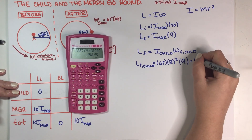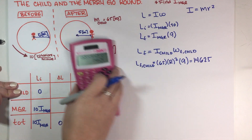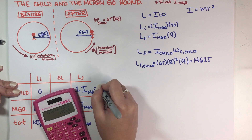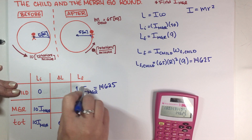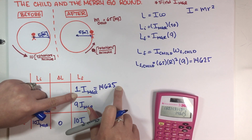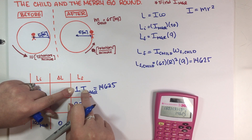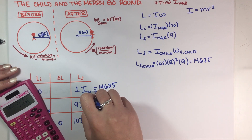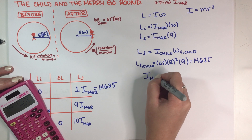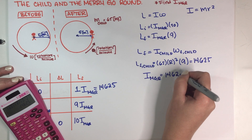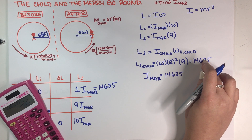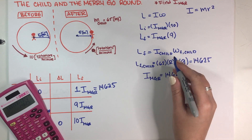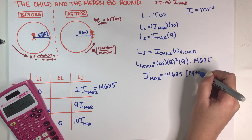That is equal to 14,625. This is the final angular momentum for the child. Because this value plus 9·I_merry-go-round must equal 10·I_merry-go-round, that means 1·I_merry-go-round equals 14,625. So the moment of inertia of the merry-go-round is 14,625 kg·m². The rotations-per-minute units cancel, leaving us with proper SI units of kilograms times meters squared.